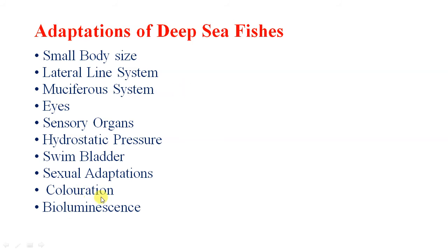What kind of sexual adaptations are there? In the deep sea, it is difficult to find a mate because of the absence of light and thin population. Hence, in some cases, the male is found attached to the body of the female.